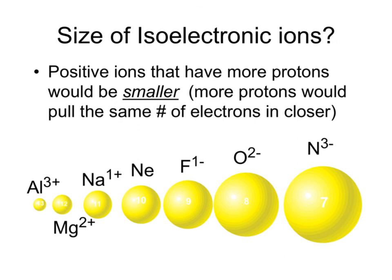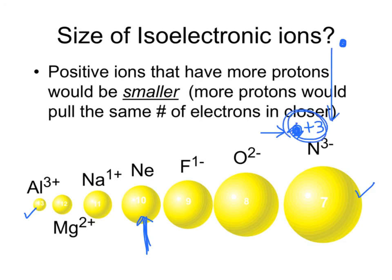The diagram confirms: the more negative the ion, the larger it is; the more positive the ion, the smaller it is, with the neutral atom in the middle. These are isoelectronic — same number of electrons. However, if comparing atoms far apart on the table, losing electrons makes such a huge difference that even an atom way further down can be smaller if it has a high positive charge.